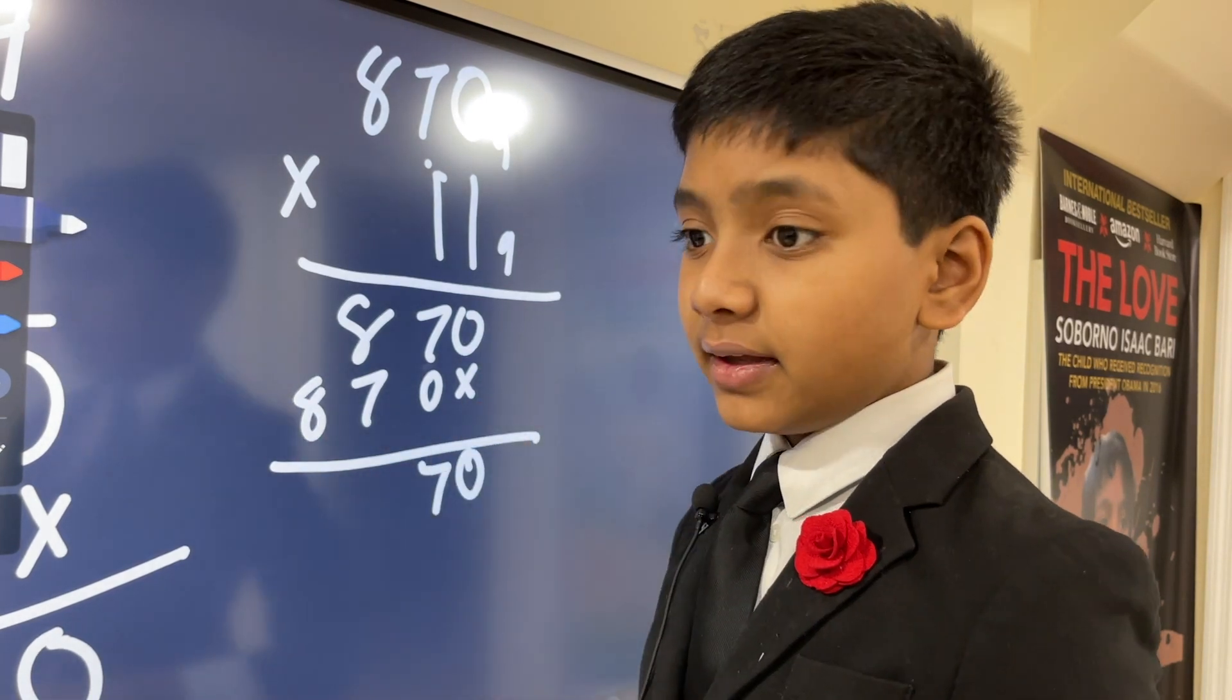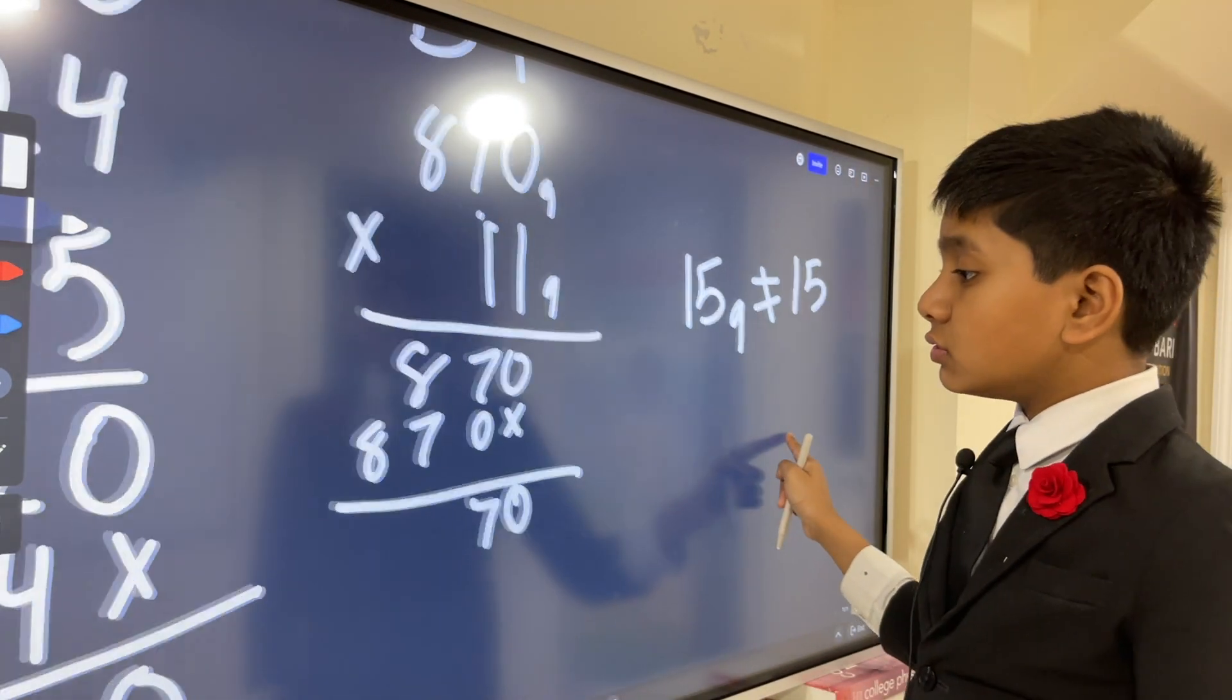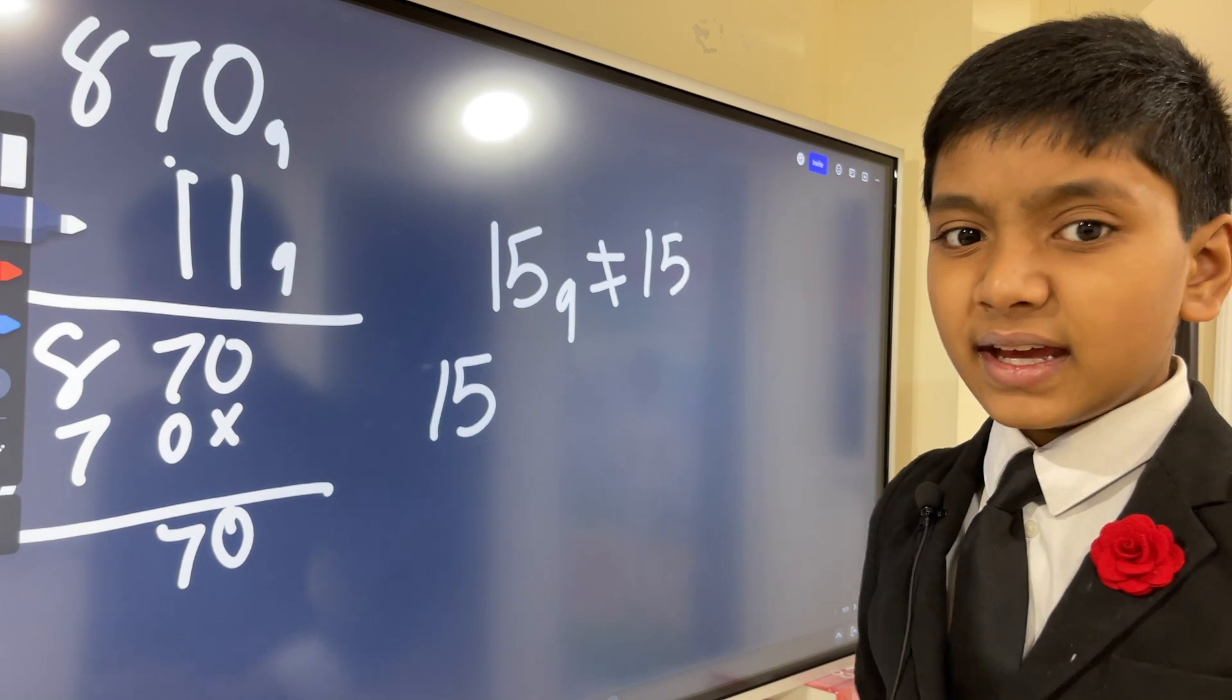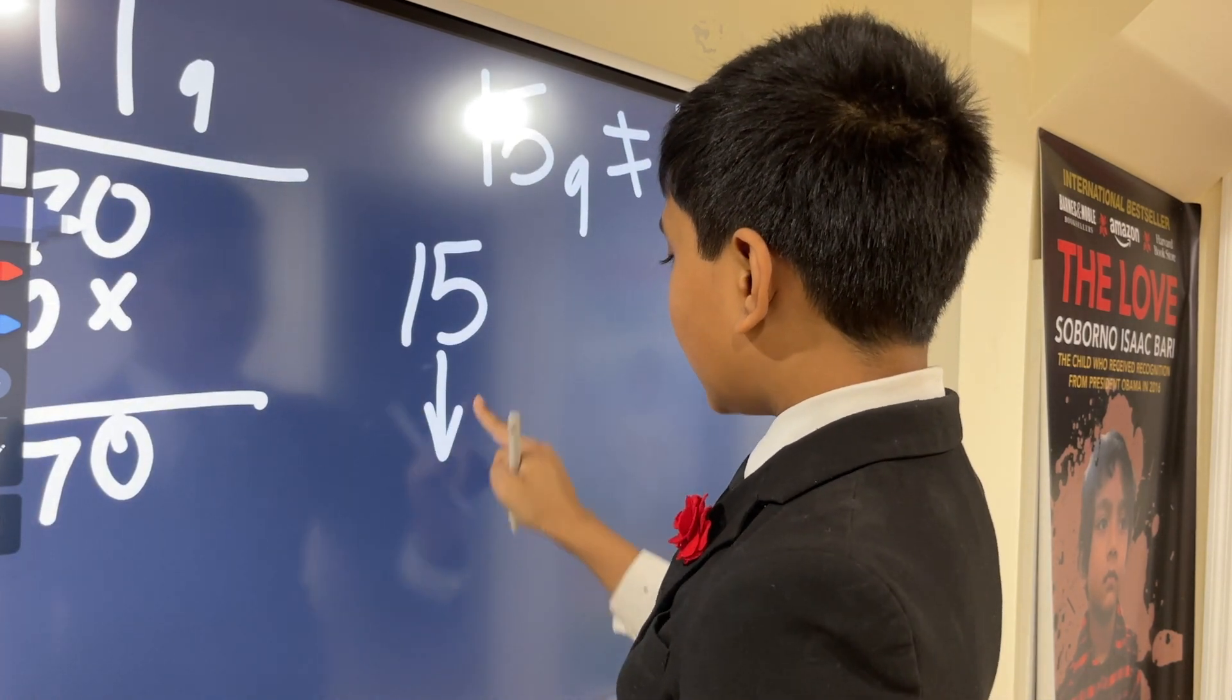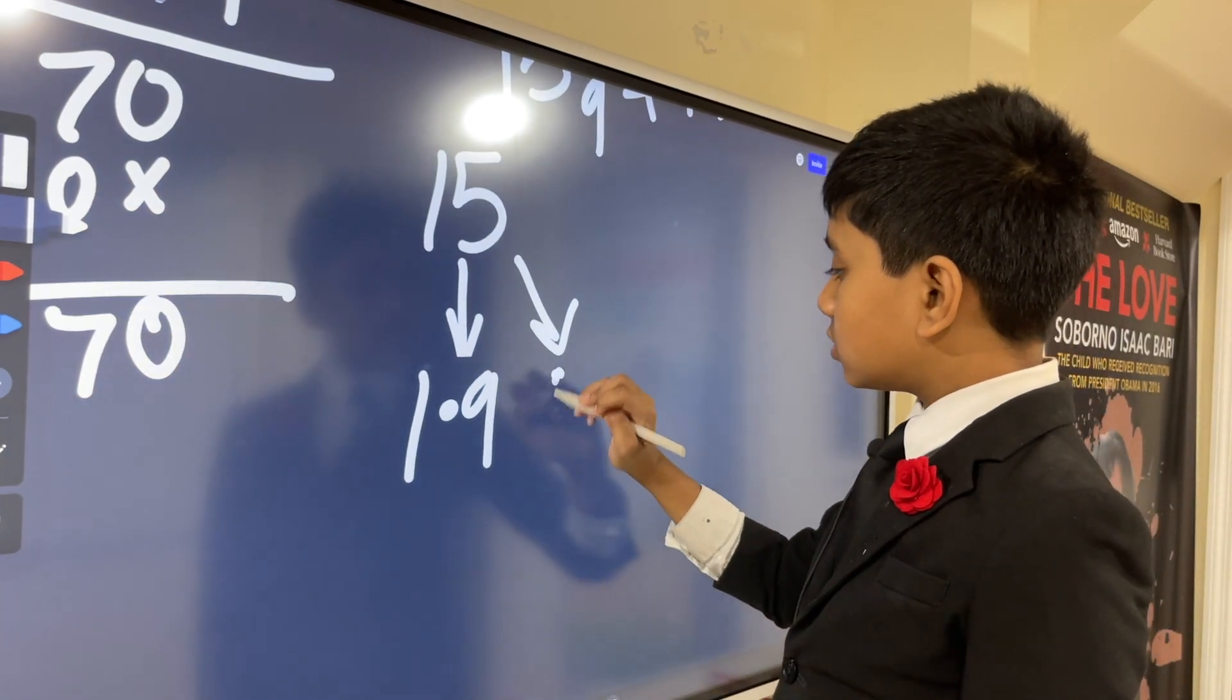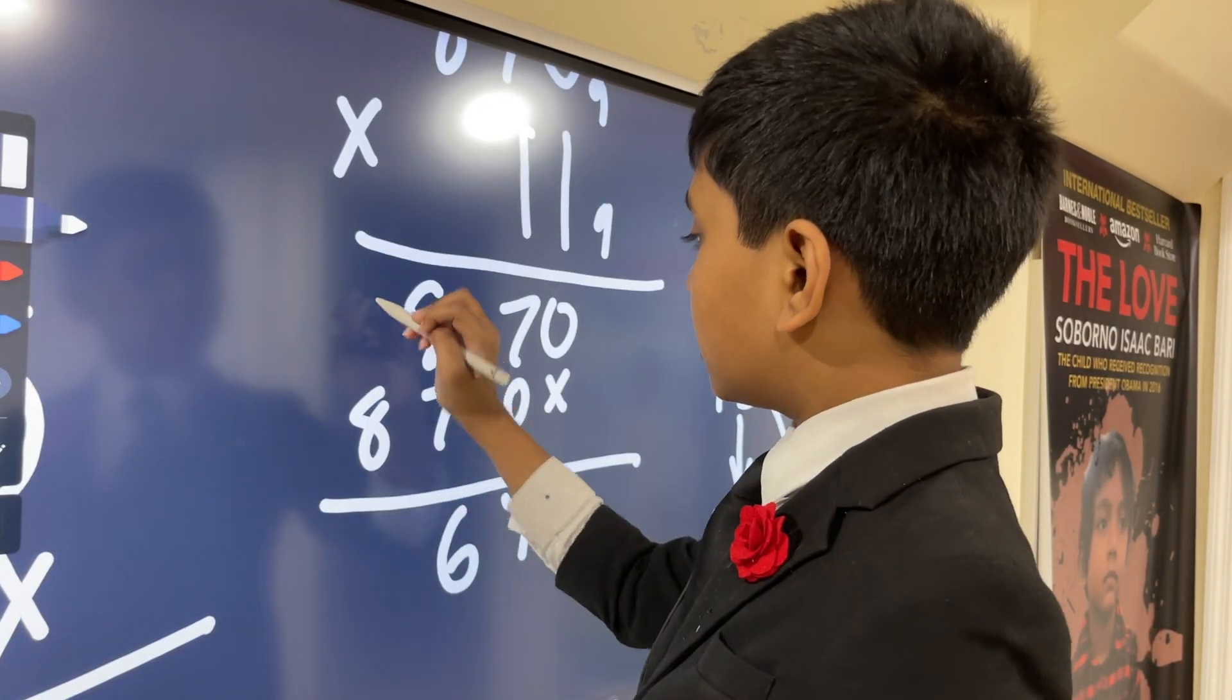When we're adding, we can do it normally, but 8 plus 7 is 15. However, 15 in base 9 is not the same as 15 in base 10. How can we convert it to base 9? This can be expressed as 1 nine and 6 ones, or 16 in base 9. So we put 6 and then carry the 1 on top.